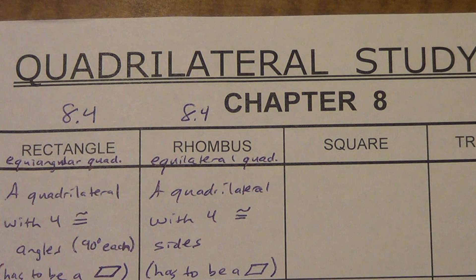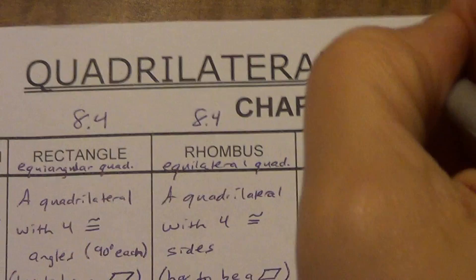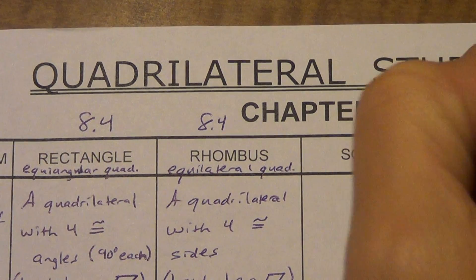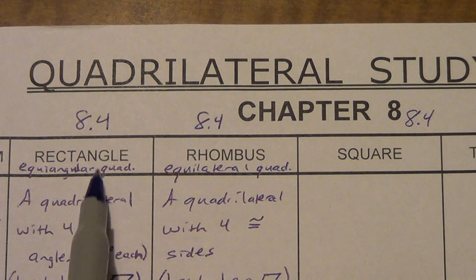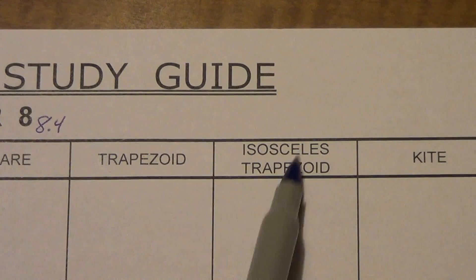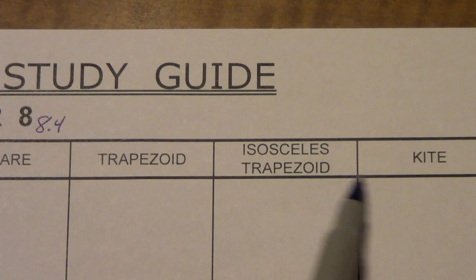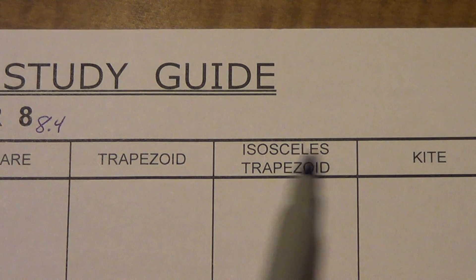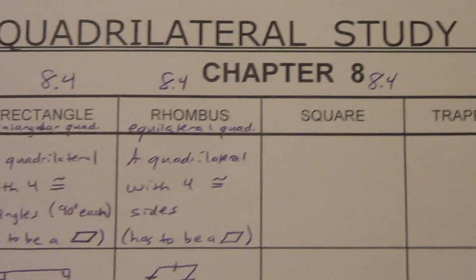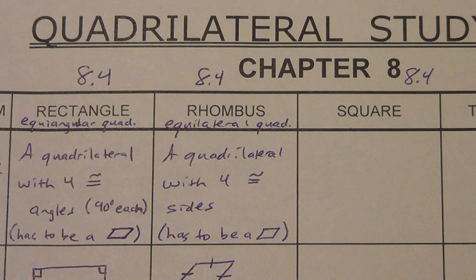Okay, here we go — last part of lesson 8.4. We're going to talk about squares. So still 8.4. Rectangle, rhombus, and square are all in lesson 8.4. When we get over to these, those are going to be in 8.5, and that might be 8.6 — we'll get into those in a little bit. Alright, squares.